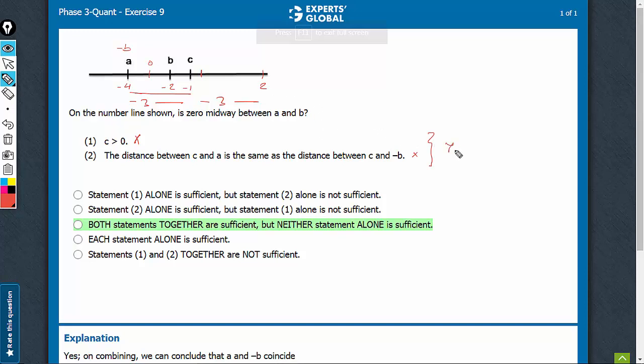On combining, we can arrive at the answer: yes, 0 is midway between A and B. So together they work - C is the right answer choice. There is a lot to be learned from this question.